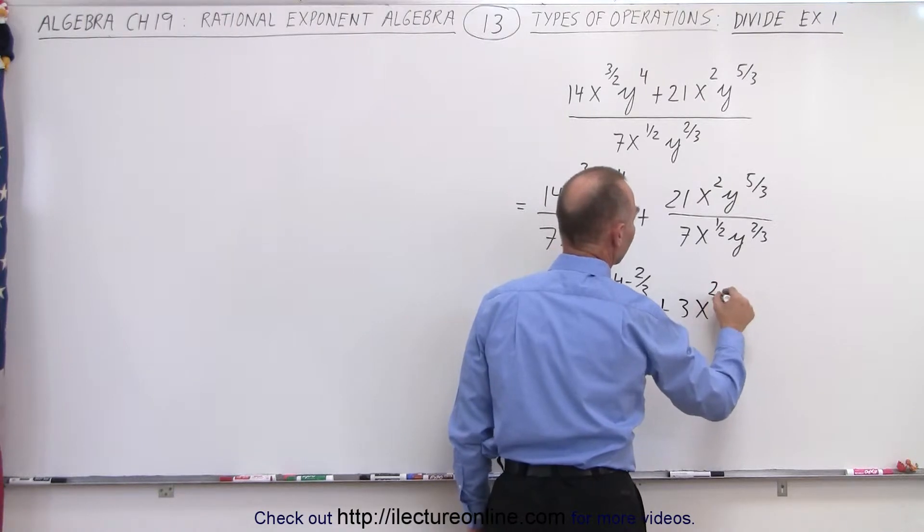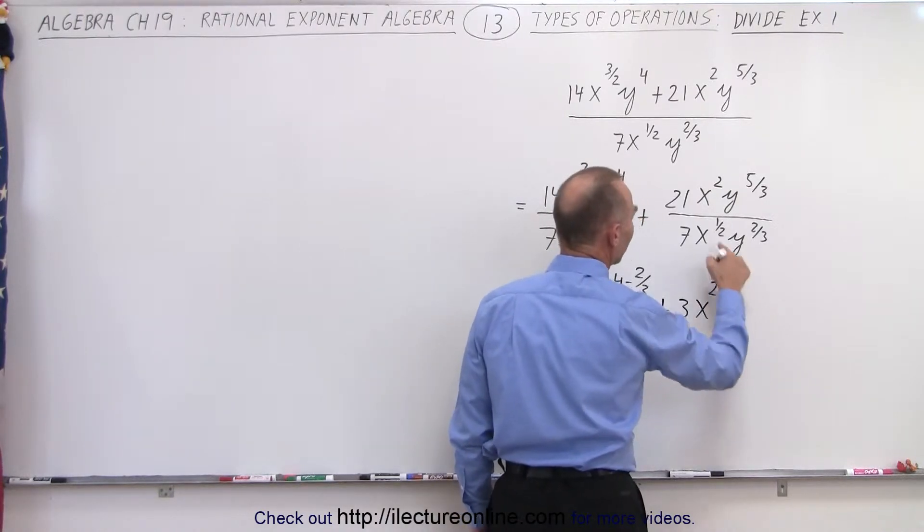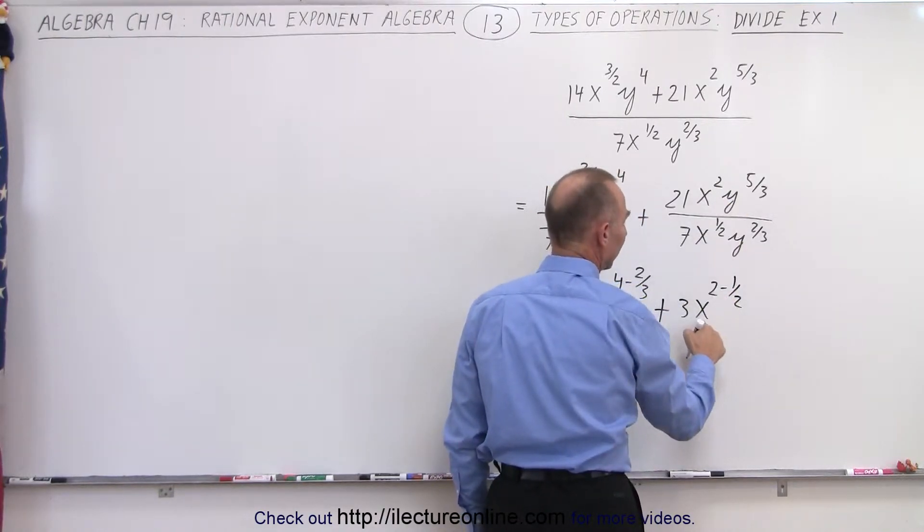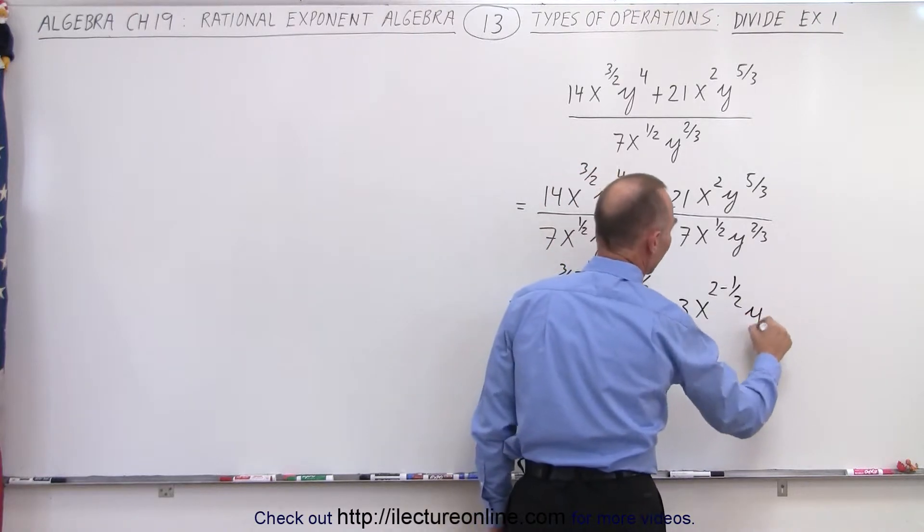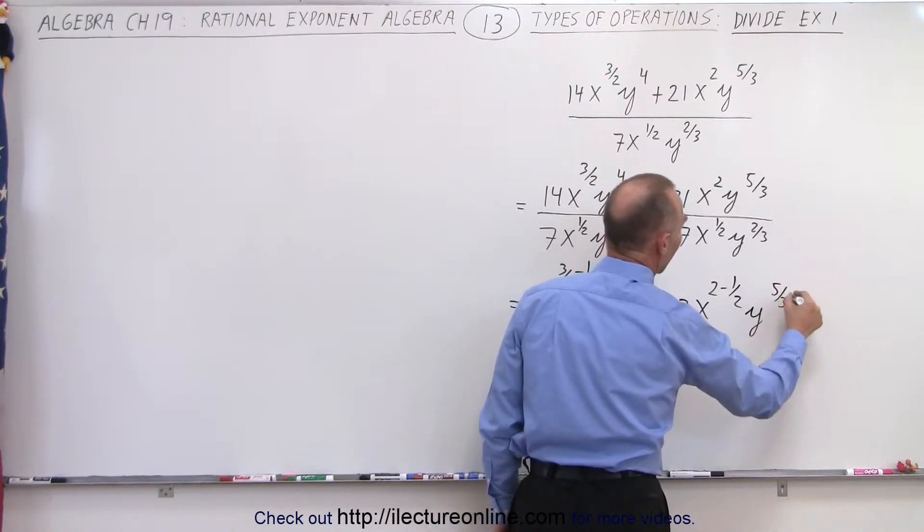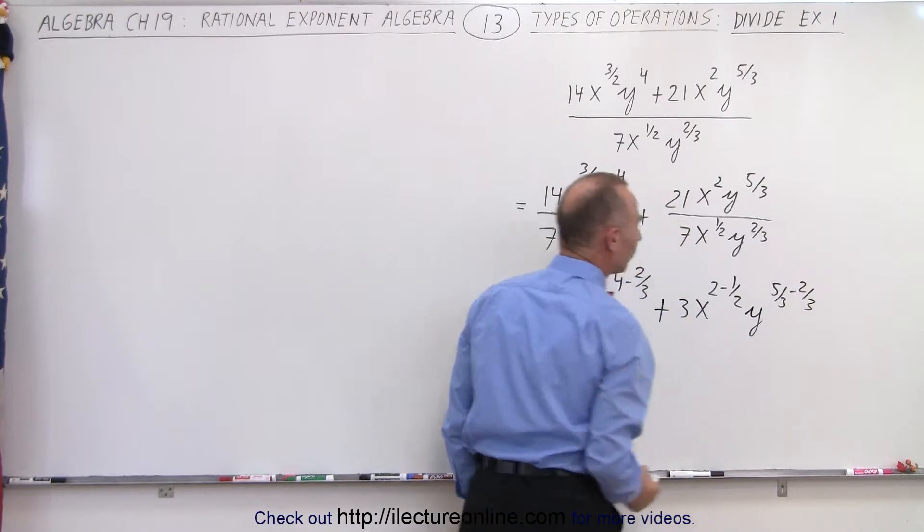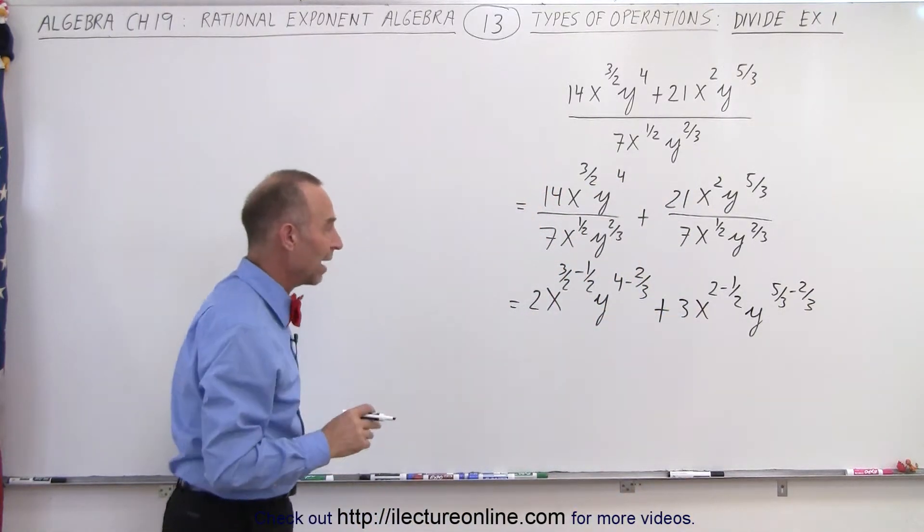Now we have x² minus 1/2. Again, we subtract exponents when we're dividing and the bases are the same. And then we have y^(5/3) minus 2/3. And now we simplify what we have left.